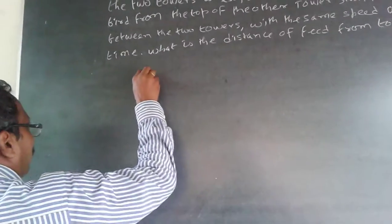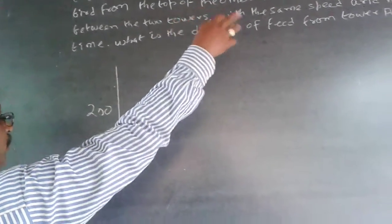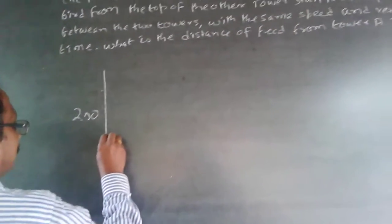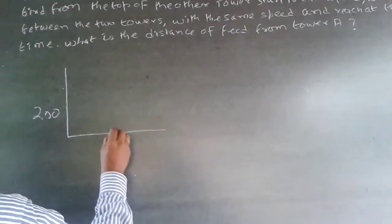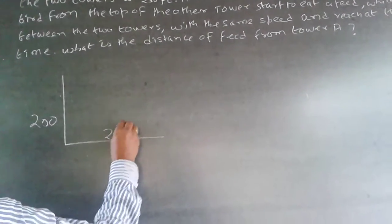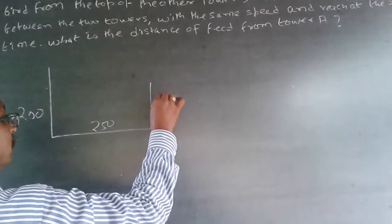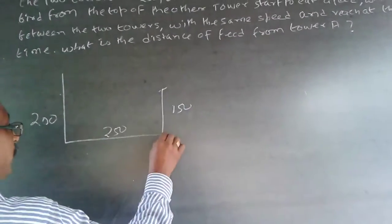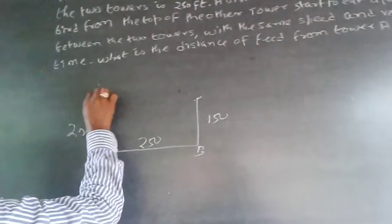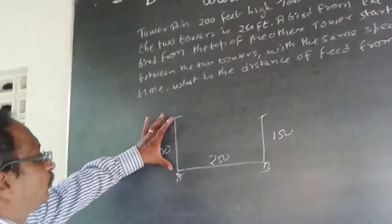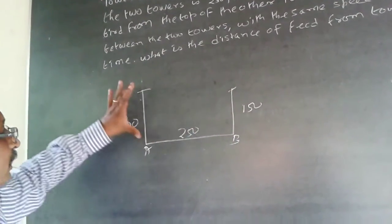Tower A is 200 feet, Tower B is 150 feet, and the distance between the two towers is 250 feet. So in the diagram: this is A, this is B, the height of Tower A is 200, the distance between them is 250, and the height of Tower B is 150. This is not to scale, just a diagram.